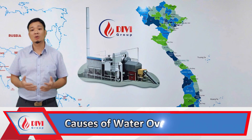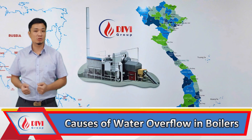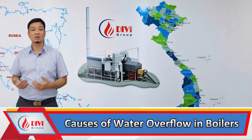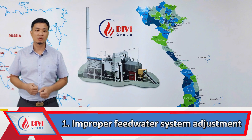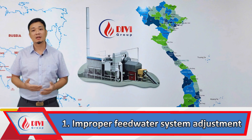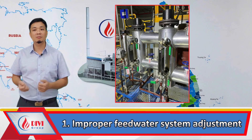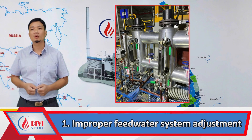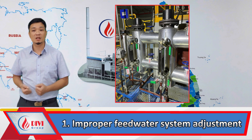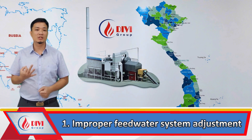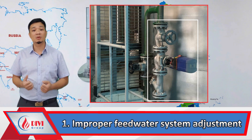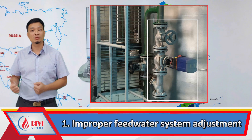Causes of water overflow in boilers. Cause one: improper feed water system adjustment. The water level sensor or level control system is not functioning correctly, causing excessive water supply beyond the safety threshold. In the case of a feed water system controlled by valves, if the valve is faulty and does not close tightly when the water reaches the correct level, an overflow can occur.